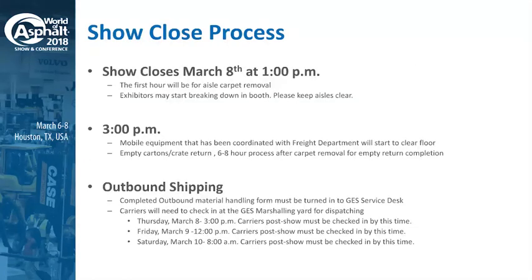For the show-close process, the show closes on March 8th at 1 o'clock. For the first hour we will be removing the aisle carpeting, so roughly at about 2 o'clock that's when we'll start bringing back all of the empties. Exhibitors can start breaking down at 1 o'clock but please keep everything contained in the booth — do not put anything out in the aisle. At 3 p.m. we're going to start taking out some mobile equipment near the freight doors to get the floor more clear as we bring in the empty crates and containers. Bringing in the empty cartons and crates is anywhere from a six- to eight-hour process after the carpet's been removed, so please be patient.